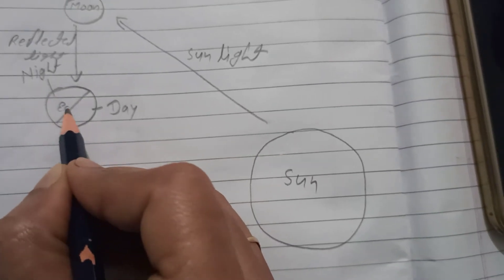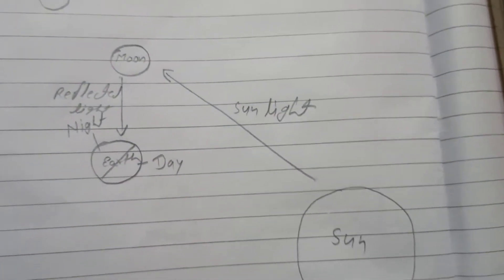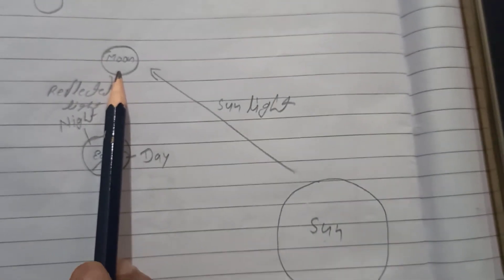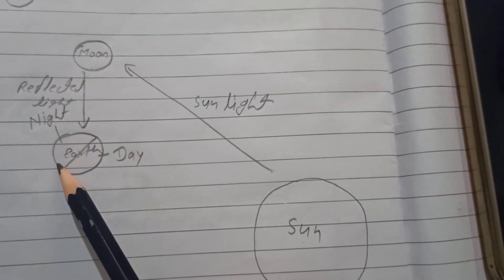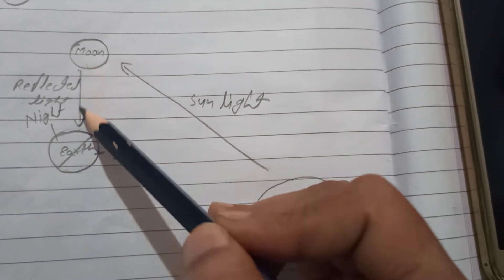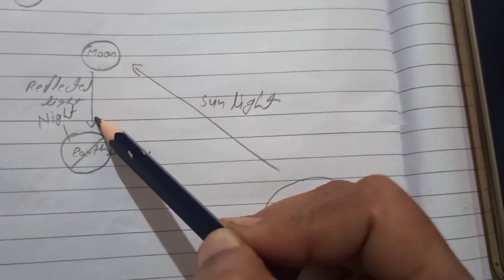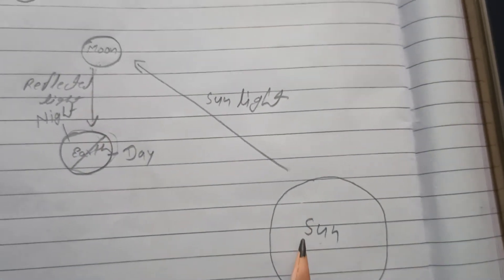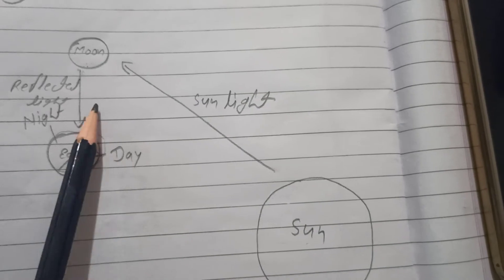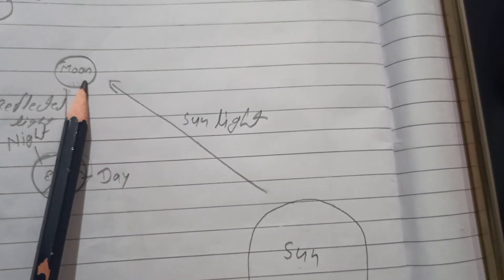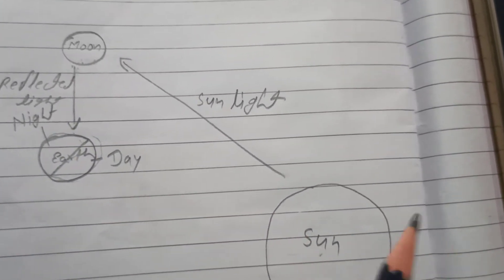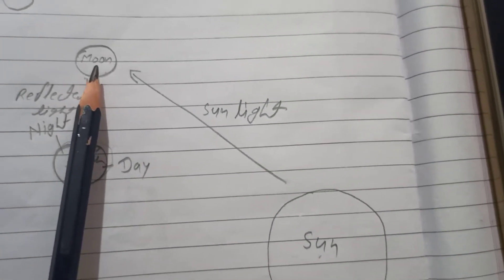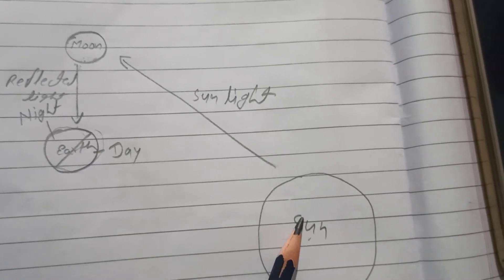Suppose this is our earth, this is the sun, and this is the moon. Moon is the closest neighbor to the earth. Moon is smaller in size and the sun is bigger in size, but when we see them, the moon and sun appear the same size.